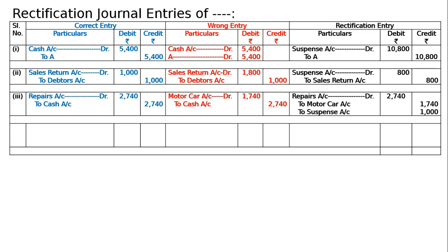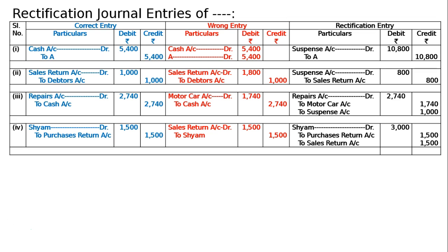Fourth entry: return goods to Sam Rs. 1500 was passed through returns inward book. The correct entry is Sam debited to purchase return account Rs. 1500. But it was passed through returns inward book, so it became sales returns debited to Sam — 1500 to 1500. Hence Sam debit will come and Sam credit will go, so we double the amount: Sam debited Rs. 3000. Sales returns debit will go — it is to be credited, sales returns 1500, and purchase returns will come: to purchase return account Rs. 1500.